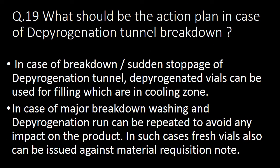Next very frequently asked question: what should be the action plan in case of depyrogenation tunnel breakdown? In case of breakdown or sudden stoppage of the depyrogenation tunnel, depyrogenated vials or ampoules in the cooling zone can be used for filling. In case of major breakdown, washing and depyrogenation run can be repeated to avoid any impact on product quality. In such cases, fresh vials can also be issued against the material requisition note.